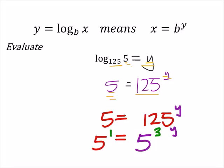Of course this 5 has a power of 1, and since we have the same basis we can rewrite this with just the exponents, meaning we'd have 1 equals 3y. And then how do we solve for y? We divide both sides by 3 and we find that y equals 1/3. In this case, so this logarithm would equal 1/3.